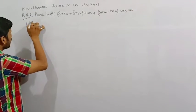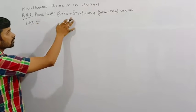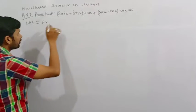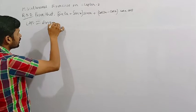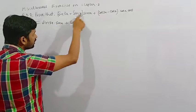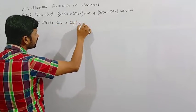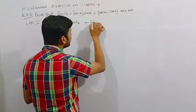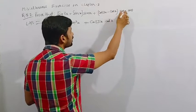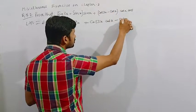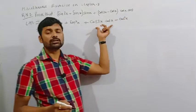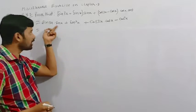Then take its LHS. What is LHS? Sin 3x plus sin x whole into sin x. So this may be written as sin 3x into sin x plus sin x into sin x plus cos 3x into cos x, that is cos 3x into cos x, and minus cos x into cos x, that is cos square x minus cos square x.